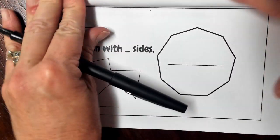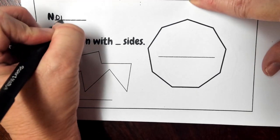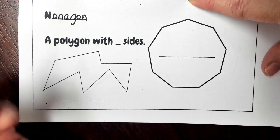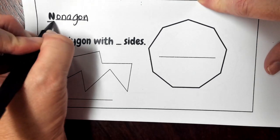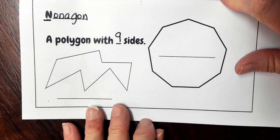Alright, and we've come to the next polygon in our study, which is called the nonagon. A nonagon is a little easy to remember because the number 9 starts with an N, and so a polygon with 9 sides is going to be called a nonagon.